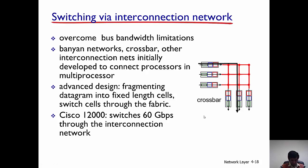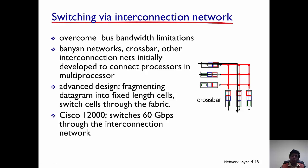In the next generation of routers, switching takes place via an interconnection network. These interconnection networks can be of different types, like banyan networks, crossbar networks, and many other forms. These interconnection networks help switching take place very fast and represent the current state of the art.